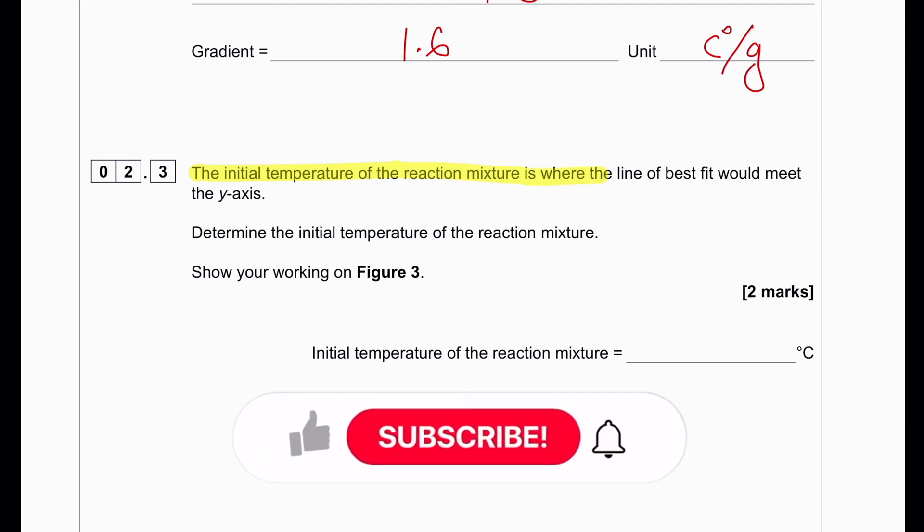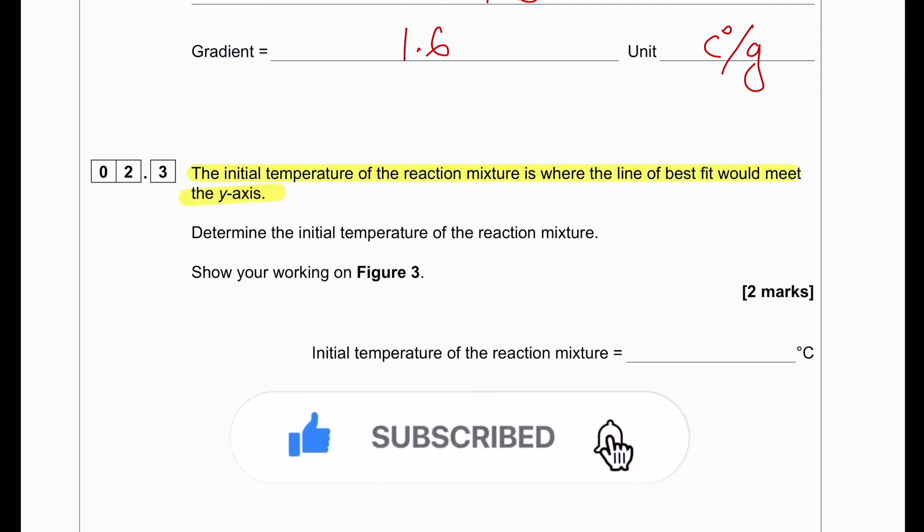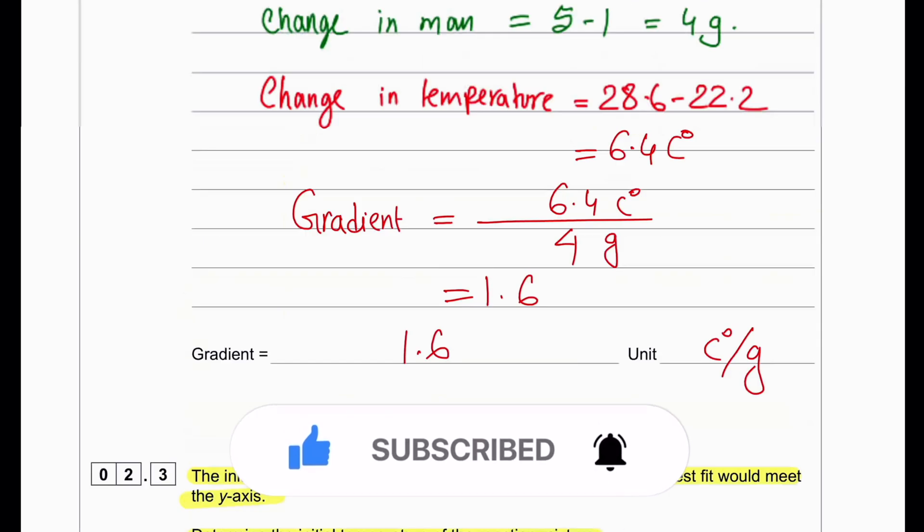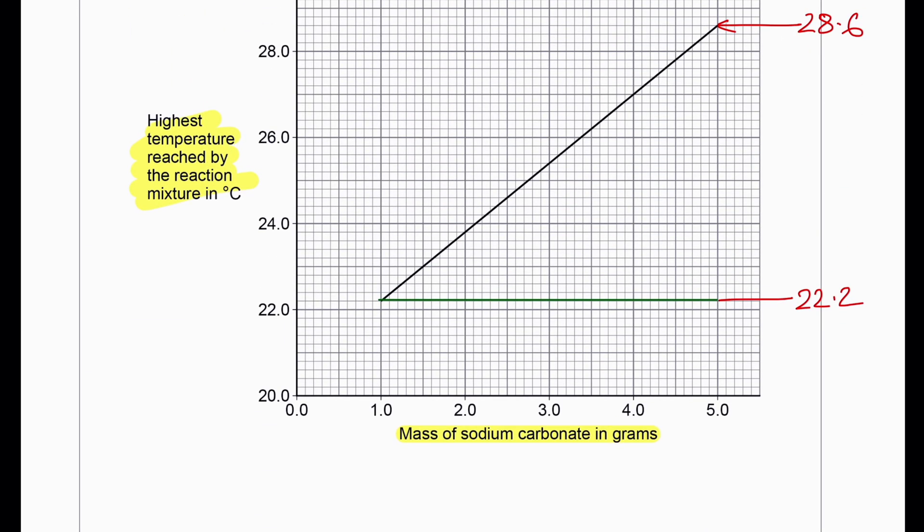The initial temperature of the reaction mixture is where the line of best fit would meet the y-axis. Determine the initial temperature. For finding this answer, we will have to extend this particular line so that it can meet the y-axis.